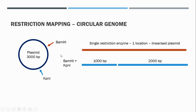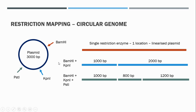If we do a double digestion with BamHI and KpnI and run the products on a gel, we end up with a 1000 and a 2000 base pair fragment, telling us that the KpnI and BamHI restriction sites are 1000 base pairs apart. However, we can't tell which side KpnI is on. We can then do a triple digest combining three different restriction enzymes, or alternatively cleave the circular DNA with BamHI only and then perform a double digestion with KpnI and PstI on that linearized fragment.